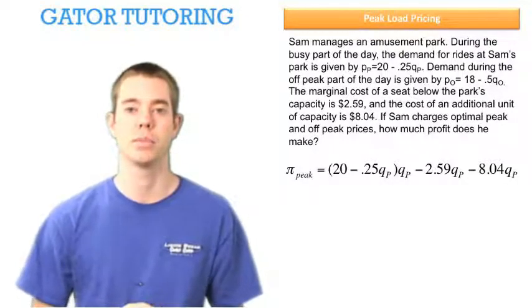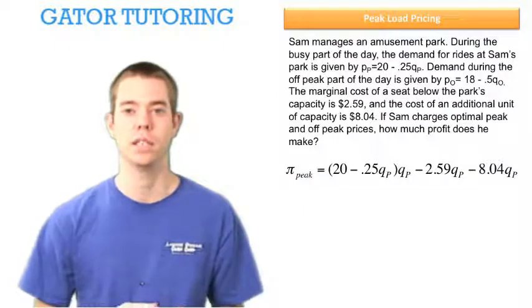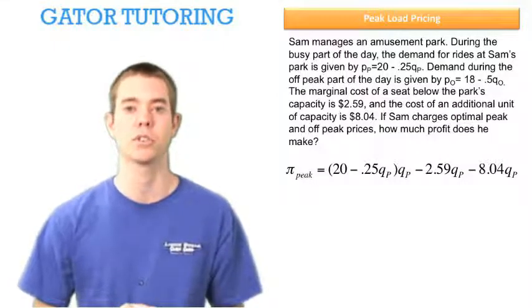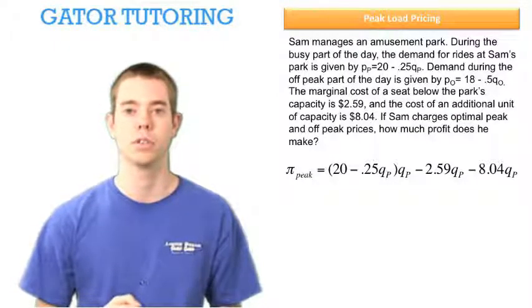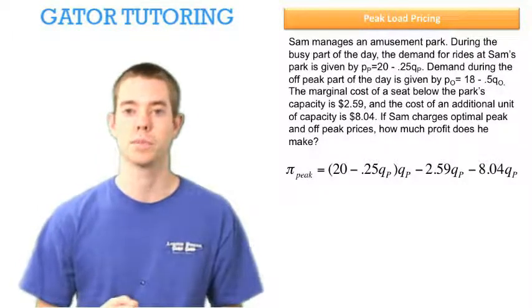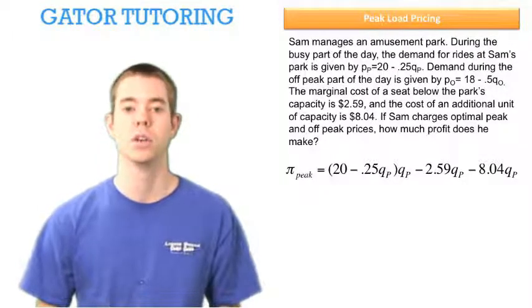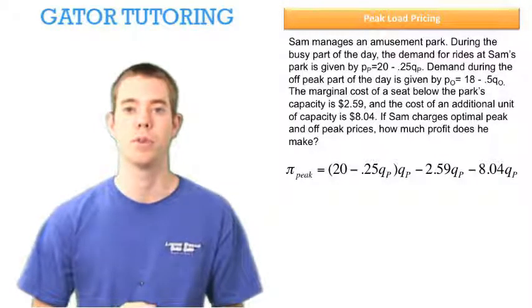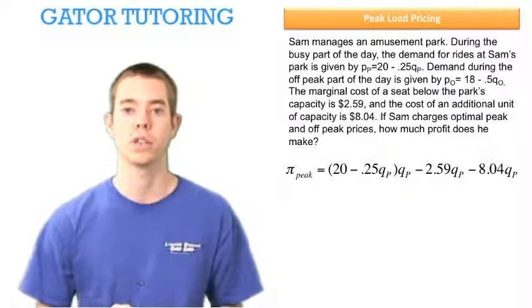Take a restaurant as an example. If you're trying to figure out how many seats and how many tables to put in your restaurant, you want to use the information from the busiest part of the day to make that decision. So the busiest part of the day determines capacity. We're only going to see that $8.04 with QP, never with QO.